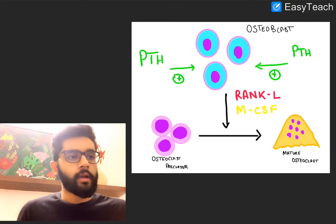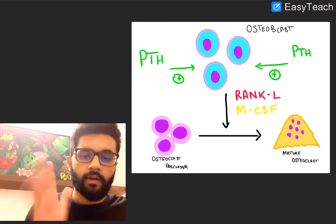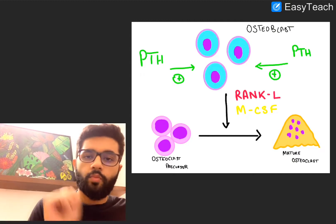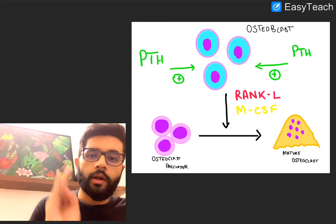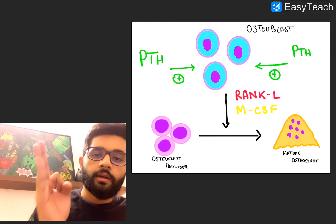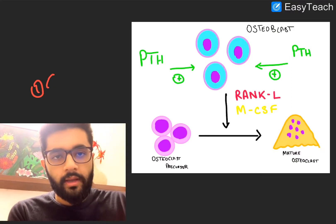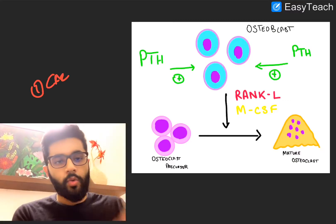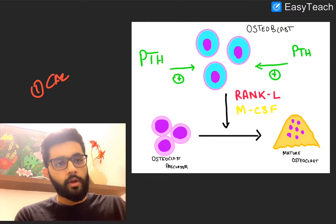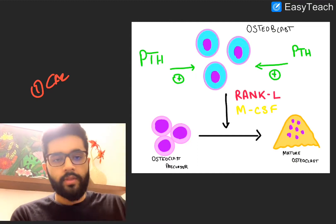We need to know about calcium hormone regulation briefly. There are three hormones which regulate calcium: one is the parathyroid hormone, two is vitamin D, and three is calcitonin. Out of these three hormones, only one is hypocalcemic and that is calcitonin. The other two are hypercalcemic, which means they increase the blood calcium levels.